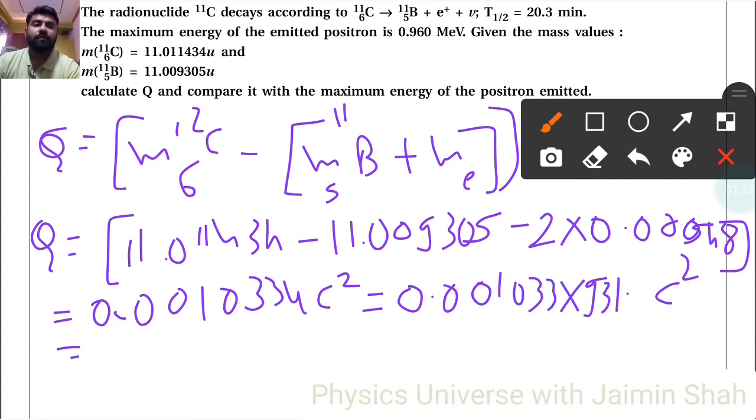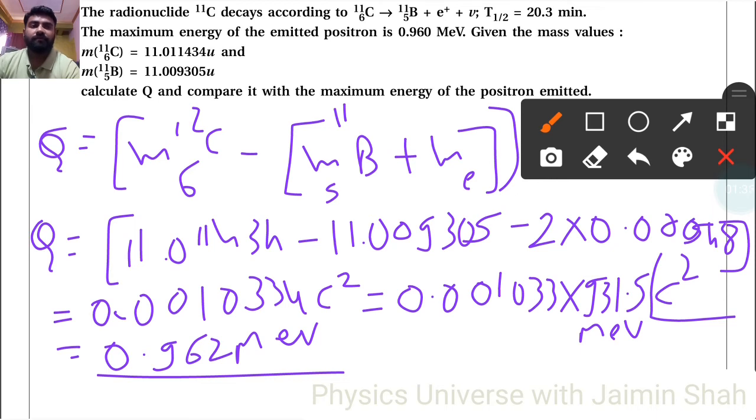So in MeV, the multiplication gives us 0.962 MeV. So this energy is of the positron. This Q value is in comparison with the positron value—the positron has the same amount of energy.